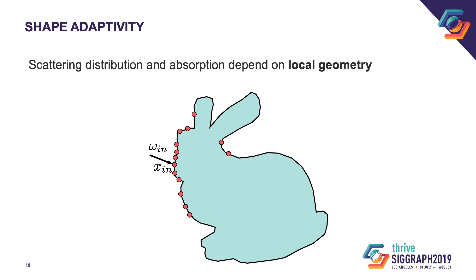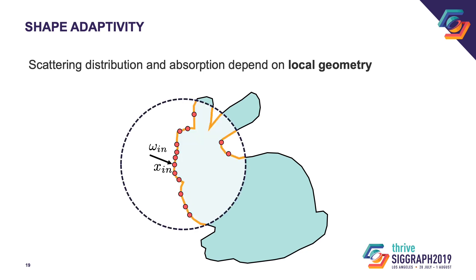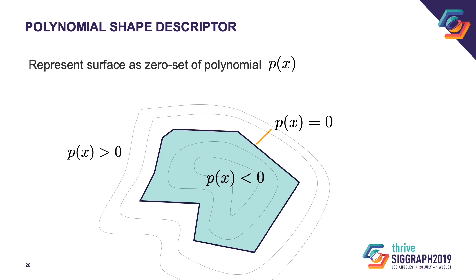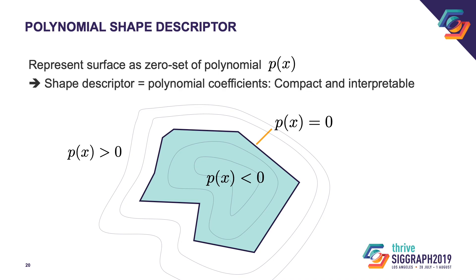Our method is shape-adaptive. The distribution of outgoing locations and the probability of absorption both depend on the input geometry. Since subsurface scattering is a localized phenomenon, we are interested in a shape descriptor which summarizes a local neighborhood around the incident location. We do not need to know about parts of the shape which are far away. We found it to work well to represent a surface using a polynomial approximating a signed distance function. The surface is the zero set of this signed distance function — zero on the surface, larger than zero outside, smaller than zero on the inside. We use a polynomial signed distance function and use its coefficients as our shape descriptor.